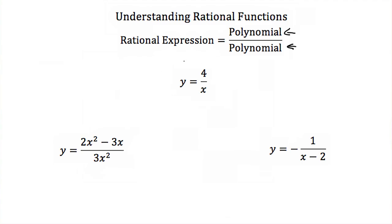Now if you've studied inverse variation functions, you'll know that there is an x in the denominator. That makes inverse variation functions rational expressions, or rational functions. But they're not the only kind of rational functions. Here I have y is equal to 2x squared minus 3x over 3x squared. I have an x squared in my denominator, and just because there's a variable down here, that makes this a rational function.